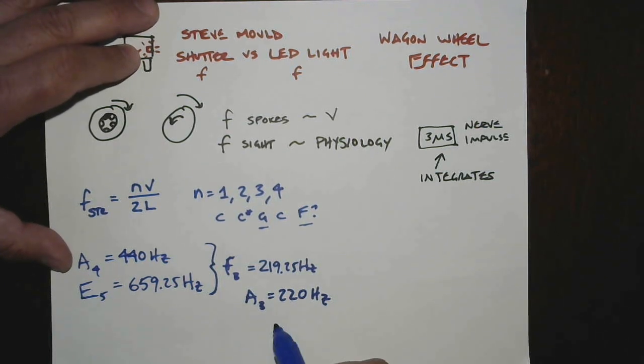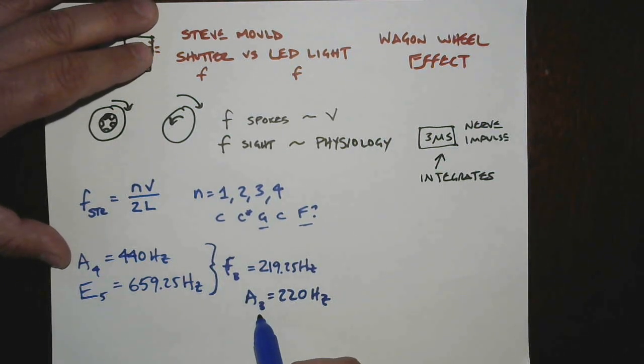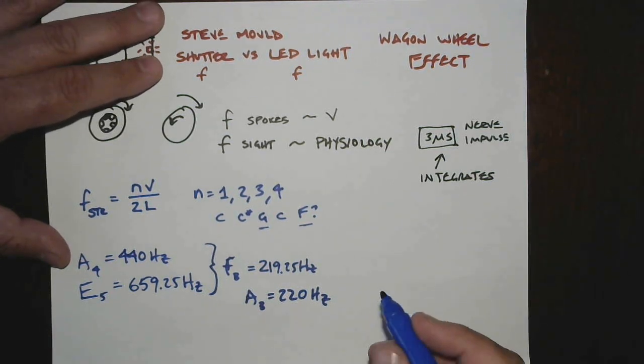And so the beat frequency you would get by subtracting these two is 219.25 hertz. And I said, well, what if that was another note? And I looked it up and son of a gun, there is an A. A3 is 220 hertz. And I say that these are so close that you wouldn't be able to tell the difference. So by playing an A and an E, you get this other A coming in an octave lower. I thought, oh, my God, I've just solved the world.